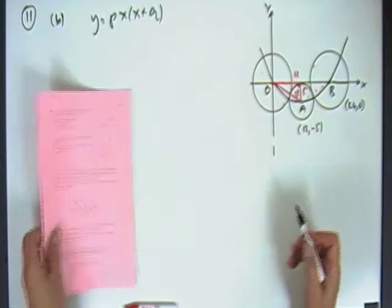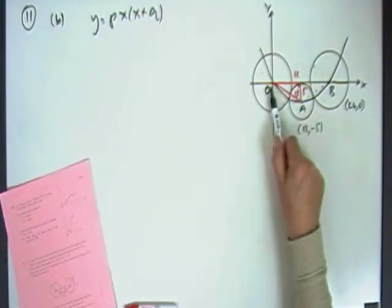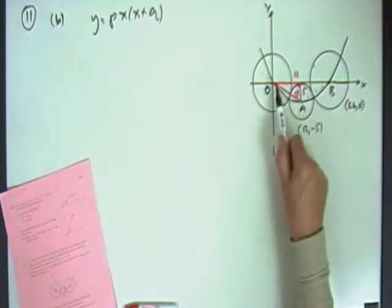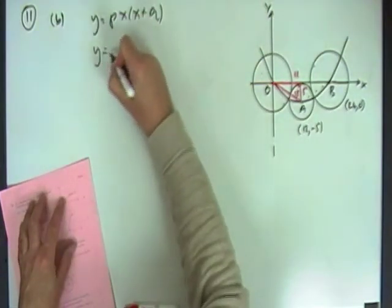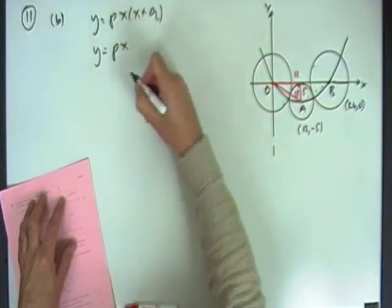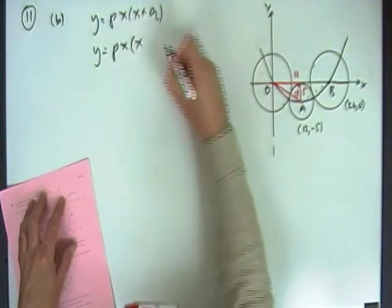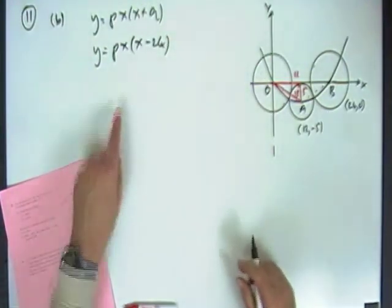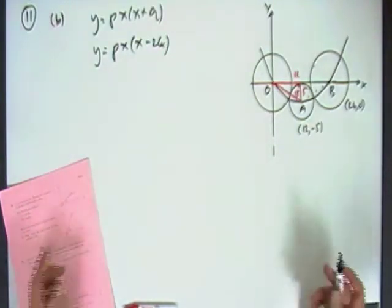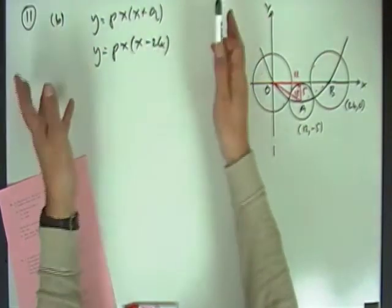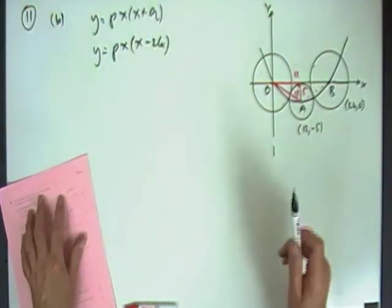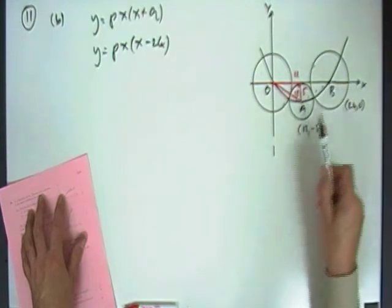Well it would be the same here. It passes through the points 0 and 24, so the brackets would be X minus 0, which is just X, and X minus 24. So we'd have Y equals P times X, as in X minus 0, and X minus 24. And then to find that constant, I need another point somewhere, there's no point using the 24 or the 0. Put them out, knocks out that side, P disappears down the plug hole with them. No, we need some point not on the X axis.